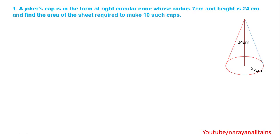Radius is 7 cm and height is 24 cm. Find the area of the sheet required to make such a cap. Area of the cap means surface area of the cap. Surface area of the cap means nothing but surface area of the cone. So, surface area of the cone is pi r l.